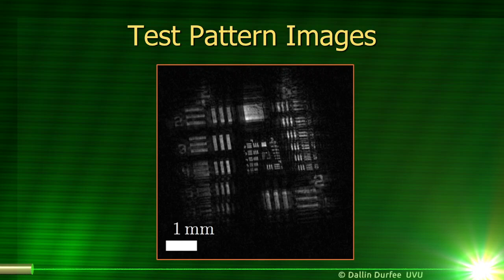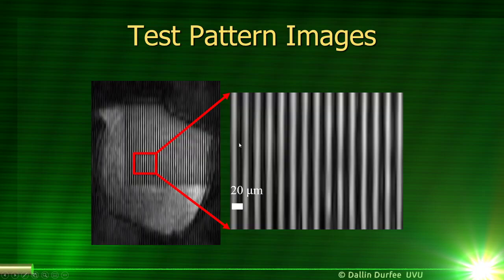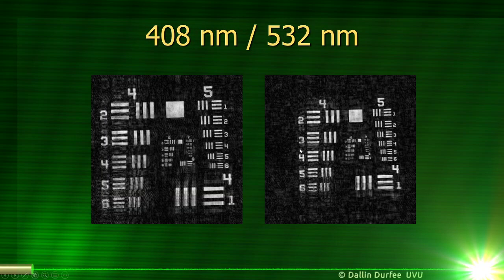Here are some images we've taken with IPSI. This is an Air Force resolution test target that we used. We also imaged a pattern of stripes, each 10 microns across spaced by 20 microns. We've been able to get resolutions down to just a few micrometers. Furthermore, the resolution we've detected is completely in line with our theory, so if we can build an interferometer that goes to wider angles, we should be able to get still higher resolutions. We also simultaneously imaged with two different laser beams at two different colors and were able to extract the data from both independently.